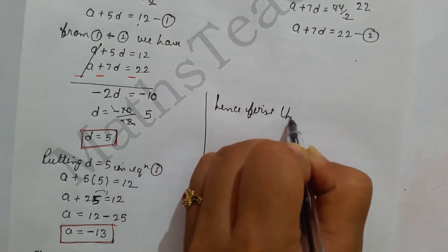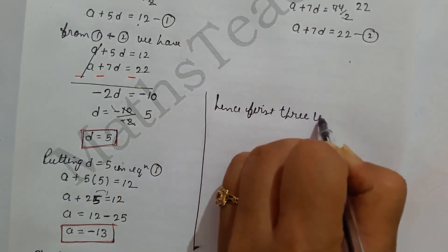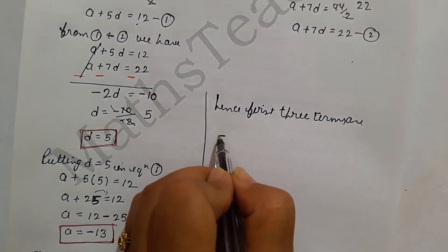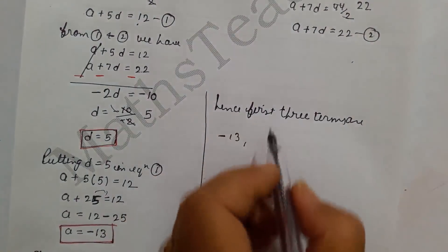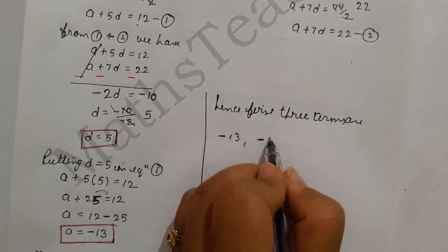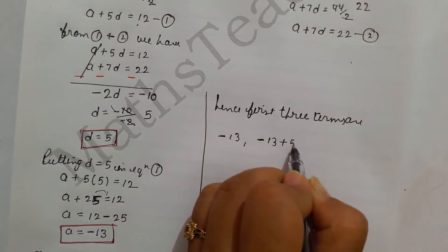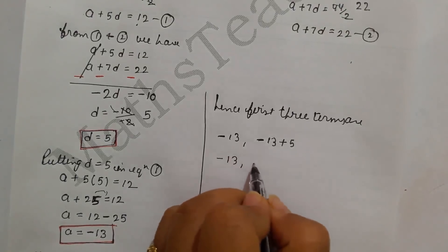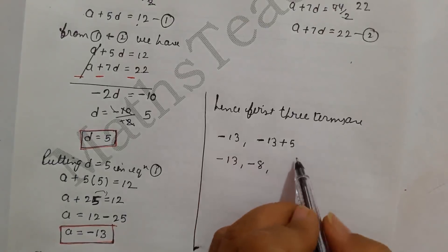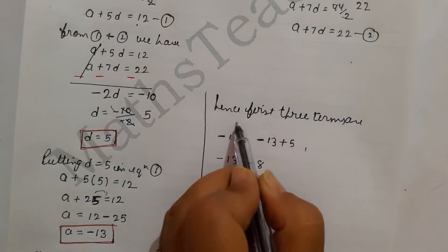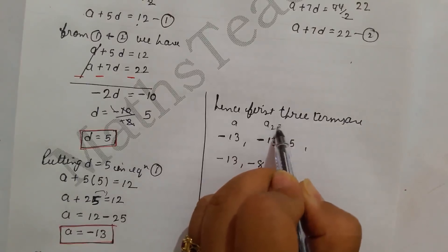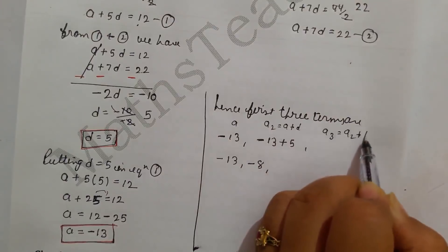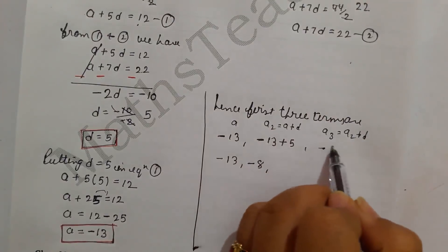Now we find the first three terms of the AP. First term: a = -13. Second term: a + d = -13 + 5 = -8. Third term: a + 2d = -8 + 5 = -3. So the first three terms are -13, -8, -3.